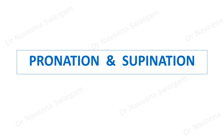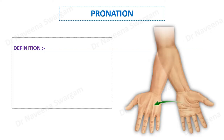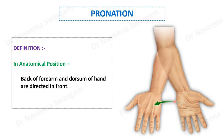Welcome to this video tutorial on pronation and supination. Pronation is defined as the position where, in anatomical position, the back of the forearm and dorsum of the hand are directed in front, with the radius crossing the ulna.